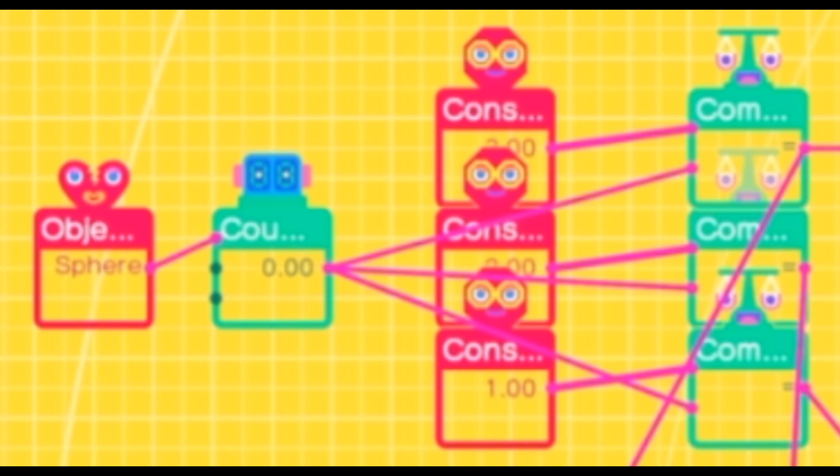That 1 Counter Nodon has to go into 3 Compare Nodons, and those Compare Nodons should be set to equal. The other thing going into those Compares is 3 Constant Nodons, all with different values. The first one should have a value of 1, and that goes into the bottom. The second one has a value of 2, that goes into the second, and the third one has a value of 3, and that goes into the third.